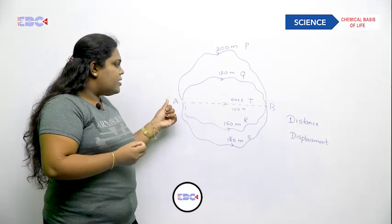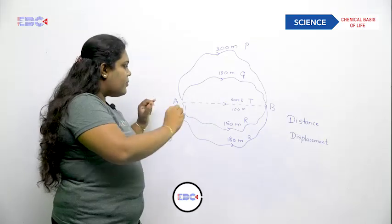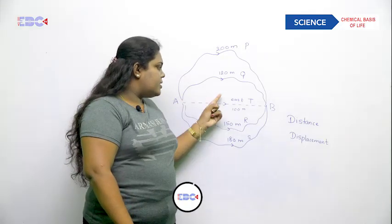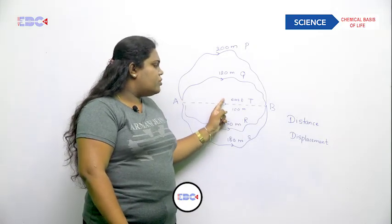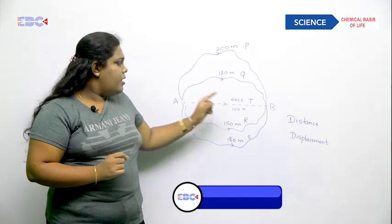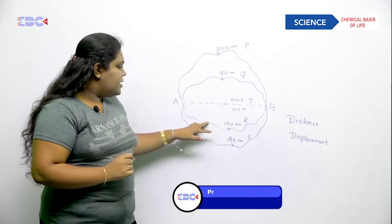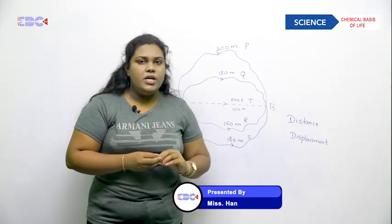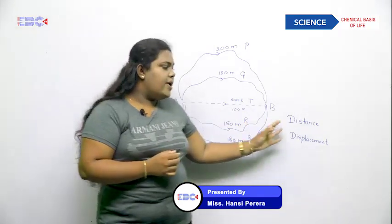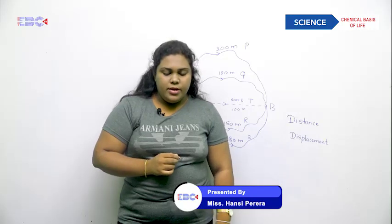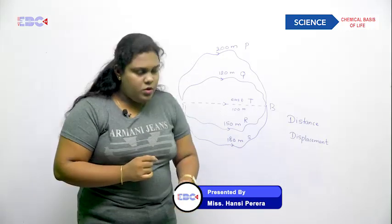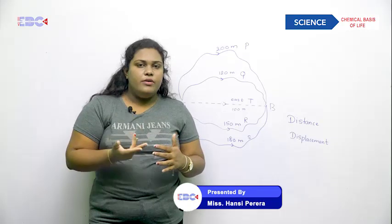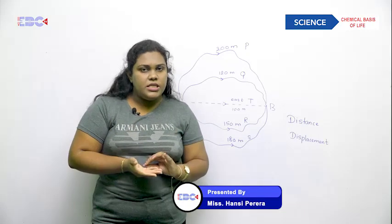Displacement is the direct path between two points. The starting point is A and the ending point is B, and it should also have a direction. You can clearly see that the direct path to B is 100 meters to the east. The other lengths — 150, 180, 120, 200 meters — are considered as the distance. For displacement, you need both the magnitude and the direction.